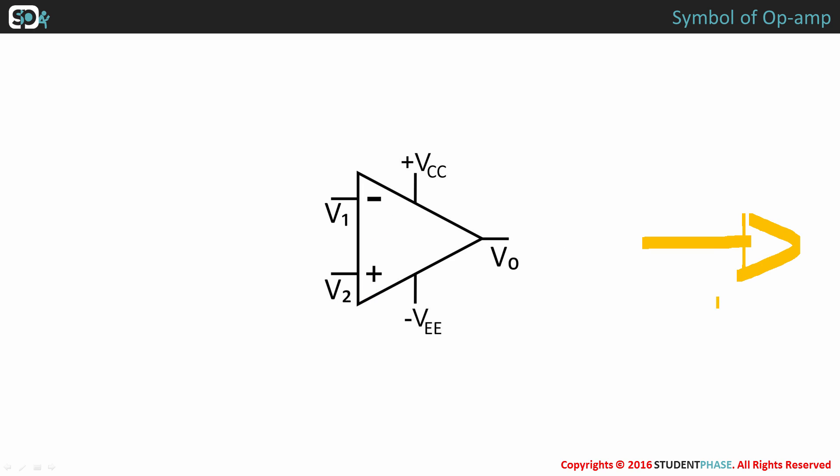Usually, op-amps have a minimum of 5 terminals: positive supply voltage terminal VCC, negative supply voltage terminal VEE, output terminal V0.